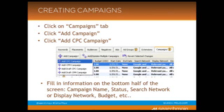Moving on from navigation to actually creating campaigns — creating campaigns in AdWords is fairly simple. First, you click on the campaigns tab in the tab bar that we discussed, and then you click add campaign under that. Then you click add CPC campaign if you're doing CPC. You can also click add CPM campaign depending on whether you're managing cost per click or cost per impressions. For example, I do mostly cost per click, so I would click on add CPC campaign.